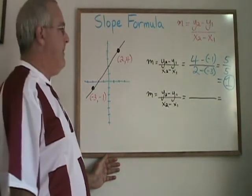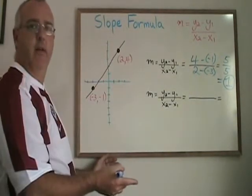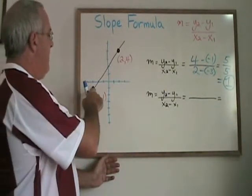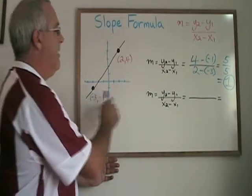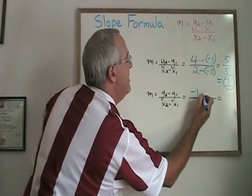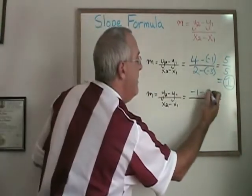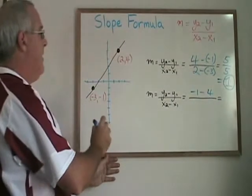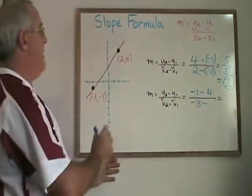Now what if I didn't call this point 1 and this point 2? What if I did it in reverse? If this is going to be my point 2, then y2 becomes negative 1 and a negative 1 goes here. y1 then would be this 4. x2 is negative 3 and x1 is 2.